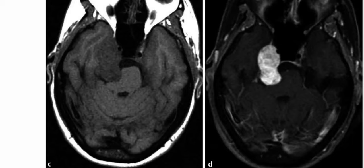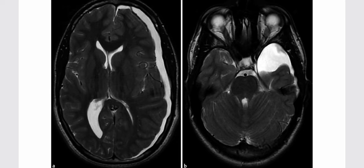Considering these imaging findings of a circumscribed extra-axial mass at the skull base with involvement of Meckel's cave, the key diagnosis is trigeminal schwannoma. This typical imaging picture is suggestive of trigeminal schwannoma. Meningioma, hemangiopericytoma, and lymphoma can also be included in the differentials.